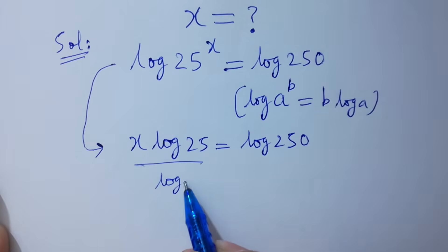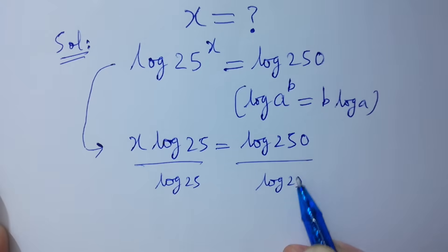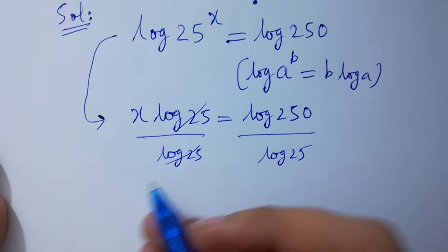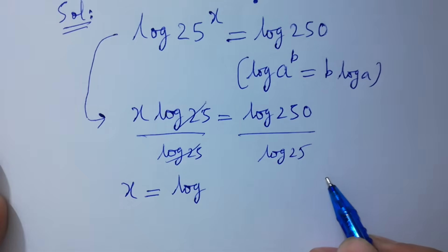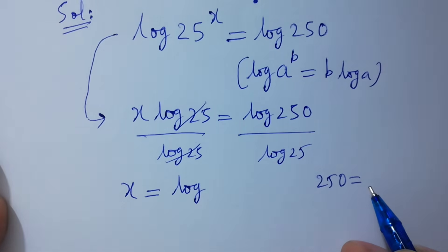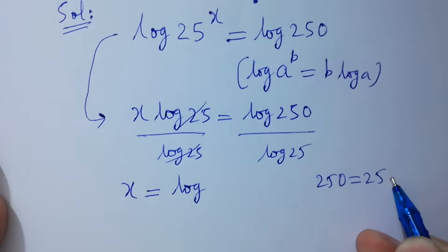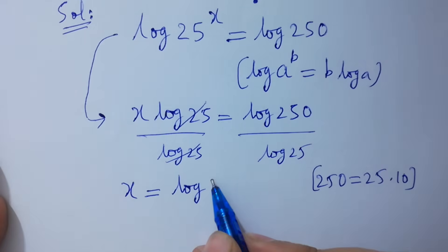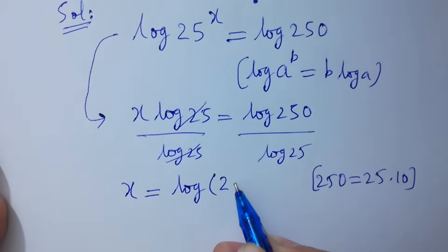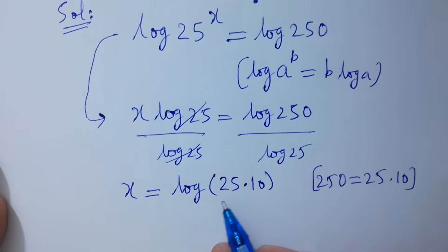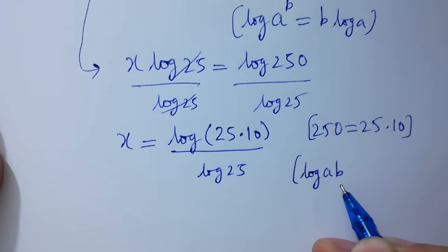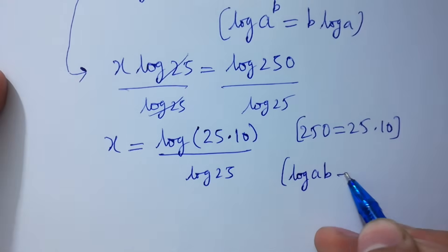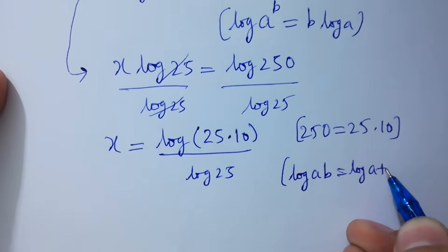Divide on both sides by log 25. Log 25 and log 25 will be cancelled. We get x equals log 250 over log 25. Now, 250 equals 25 times 10, so log 250 is log(25 × 10) over log 25. Since log ab equals log a plus log b.